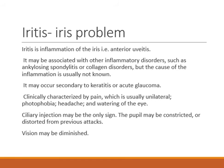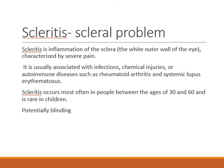The typical history in iritis — that is anterior uveitis — is a young patient with a recurrent history of redness and painful eye. There may be a background history of ankylosing spondylitis, that is back pain, or other collagen disorders. On examination, the eye will be red especially around the cornea, and the pupil may be distorted, constricted, or irregular from previous attacks.